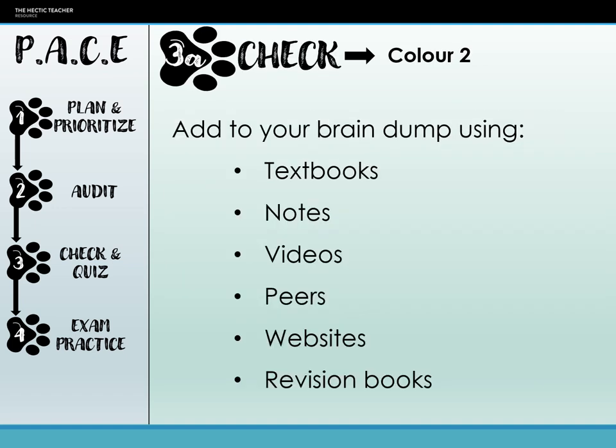When you've done that, that's when you go to the check. This is where you go to your second colour. You add to that brain dump — whether it's a mind map, summary sheet, or whatever — and fill in any gaps using textbooks, your notes, videos, your peers, friends doing the same subject, websites, or revision books. There is an absolute wealth of support and information on the internet. Post-COVID, teachers were making videos for flips and home learning — those are all still available on YouTube to support your learning.